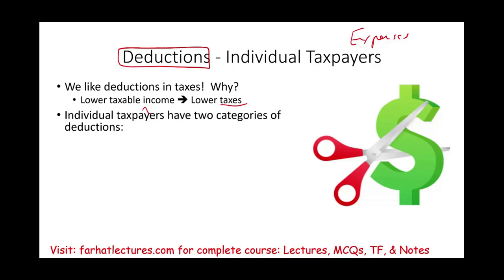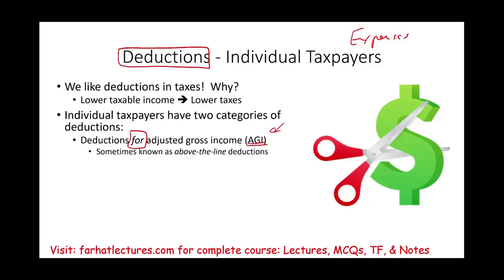We need to understand that for individuals, we have two categories of deductions, and we're going to differentiate between those two categories. We have deductions for adjusted gross income — sometimes known as above-the-line deductions. These are deductions that are above a certain line, and that line is AGI.